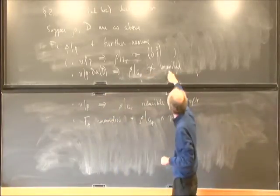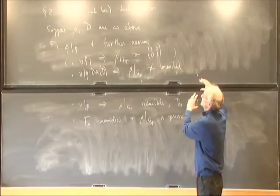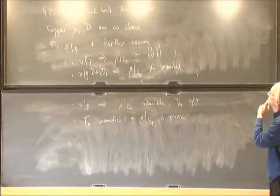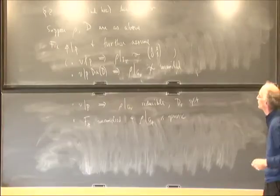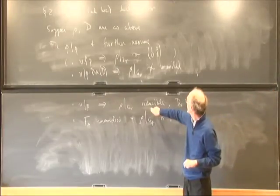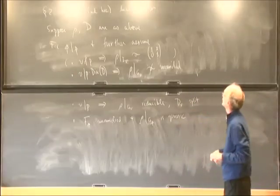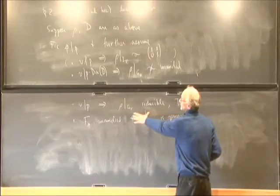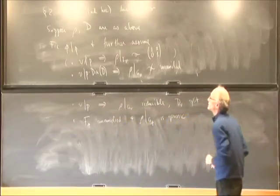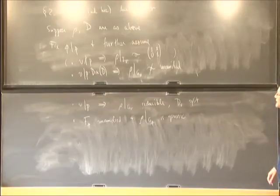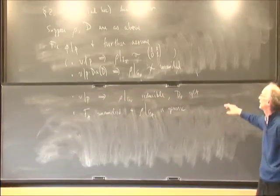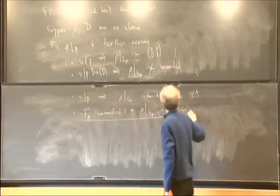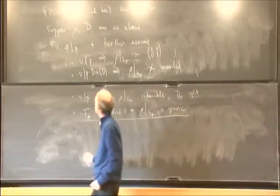For primes dividing p, I will further assume that the local representation is reducible, and also that D_v is split. For the fixed prime p at which I'll be working, I'll assume that F_p itself is unramified, that the local representation, besides being reducible, is generic. I'll come back to the definition of generic. This assumption is the situation where we can say something; it could still be relaxed to some irreducible cases if F_v is unramified over Q_p, using work of Chang.